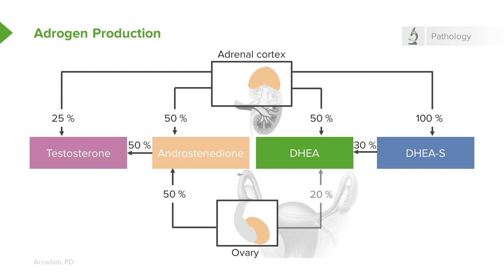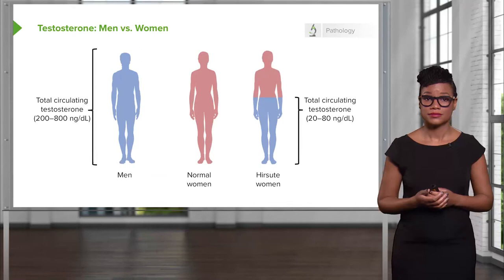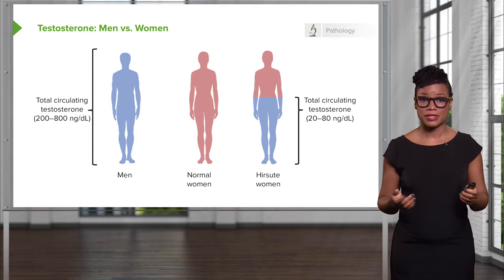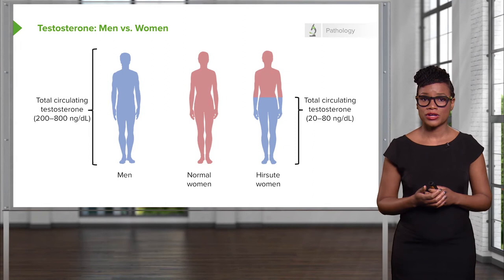Recall that as women go into menopause, all of these hormones will go down. When it comes to testosterone in men versus women: men usually have a total circulating testosterone between 200 and 800 nanograms per deciliter, while in a normal woman, you may see between 20 and 80 nanograms per deciliter.